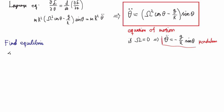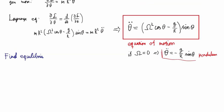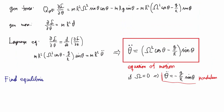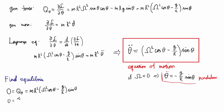Now we don't have a force to work with directly, but we have a generalized force, and it acts exactly the same way: when this is zero, we're at an equilibrium. So this corresponds to setting the generalized force Q_theta equal to zero. Equivalently, setting the acceleration to zero means the force is zero, and we can drop the MR-squared factor from the beginning.